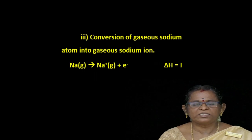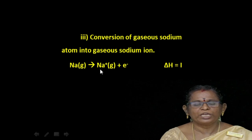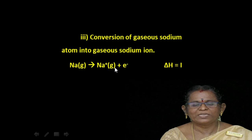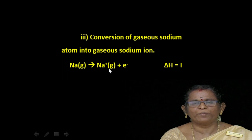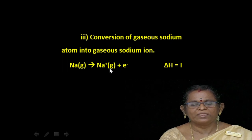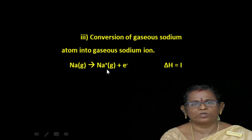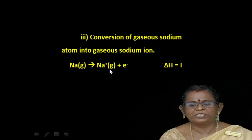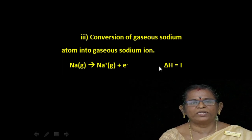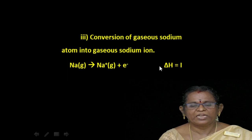Third step: conversion of gaseous sodium atom into gaseous sodium ion. Na (gaseous) → Na⁺ (gaseous) + e⁻. One electron is removed from the gaseous sodium atom. Energy is required for this process, so it is an endothermic process. The value obtained is taken as a positive quantity. ΔH = I, where I is the ionization energy.